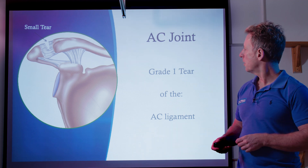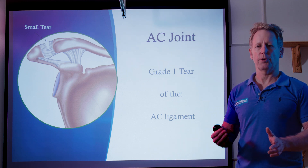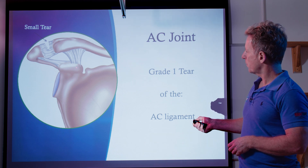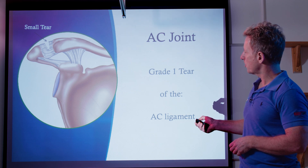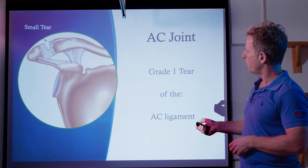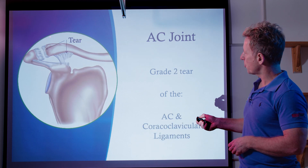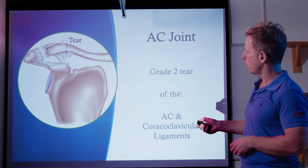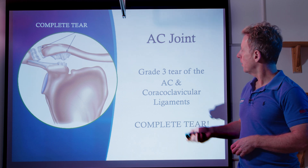This is the AC joint. There are many grades, but to keep it simple we'll cover three. Grade one is a minor tear, grade two a moderate tear, and grade three a full thickness tear. You can see the ligament is partly torn here — this is the coracoid process, this is the clavicle. These are the coracoclavicular ligaments, split into the trapezoid and conoid ligaments, and this is the coracoacromial ligament and the AC ligament. Grade two would show a step deformity with partial coracoclavicular ligament tear and full AC tear. Grade three is a full tear of all ligaments.